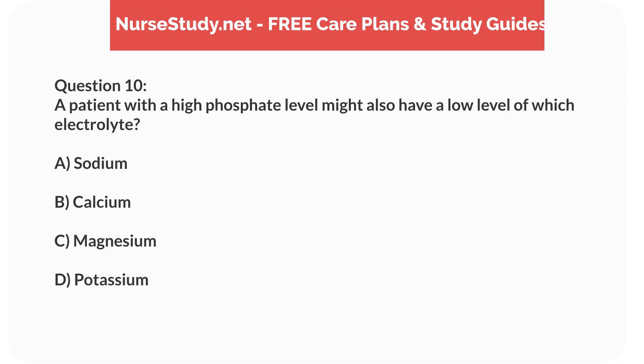Question 10. A patient with a high phosphate level might also have a low level of which electrolyte? A. Sodium. B. Calcium. C. Magnesium. D. Potassium.